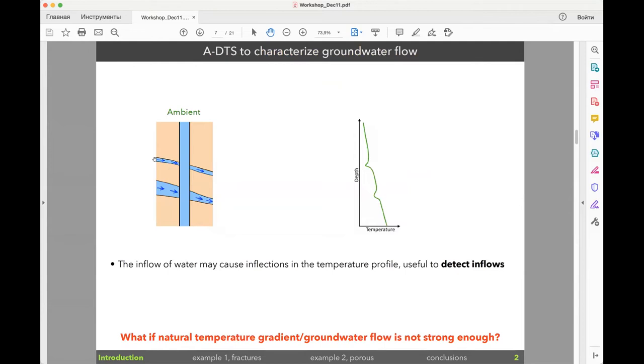If we have water flowing zones bringing water to the borehole from shallower or deeper origin, we will be able to see these inflections in the temperature profile that can be useful to detect inflows in a passive manner. But sometimes if you have flow in zones that are sub-horizontal, or if the flow through the zones is not strong enough, we will not see this. These inflections will be too small to help us detect inflows.